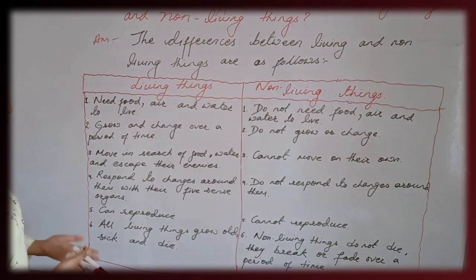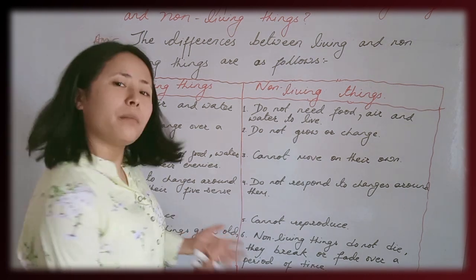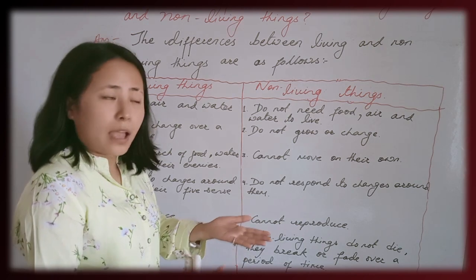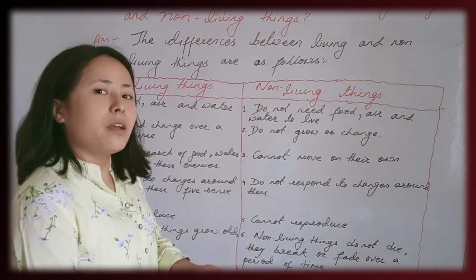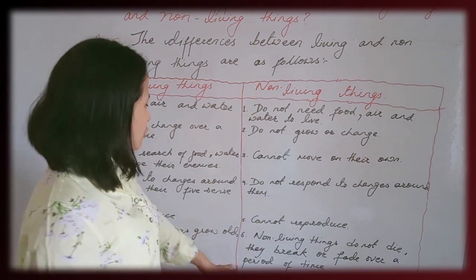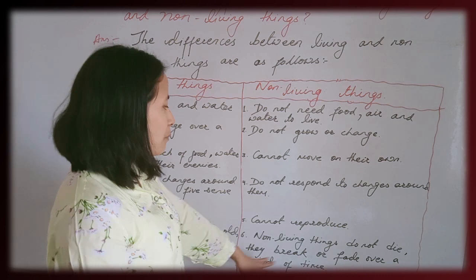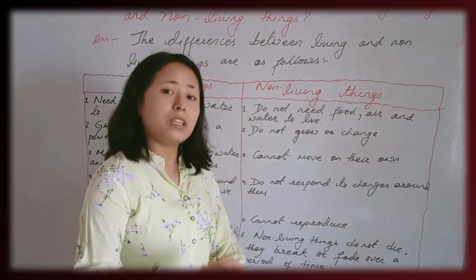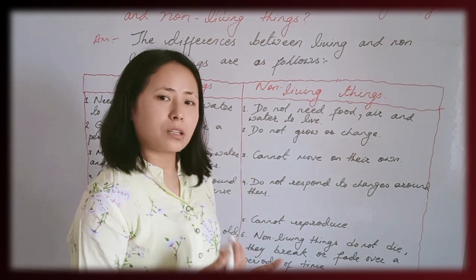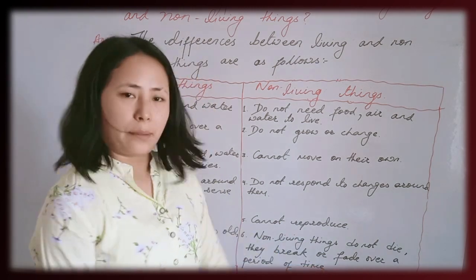Number six: all living things grow old, get sick, and die. Those who are born, live, grow, and after growing old, they eventually die. Non-living things do not die — they don't have life. But they can break or fade over a period of time.